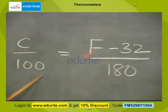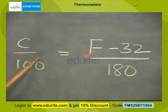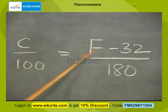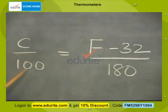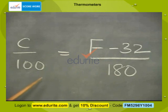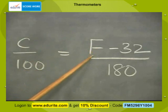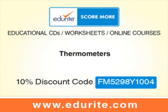There are two different scales in thermometry: one is the Celsius scale and another is the Fahrenheit scale. The formula relating Celsius and Fahrenheit is given by the relation C/100 = (F − 32)/180. By using this formula, we can convert any temperature from one scale into the other.